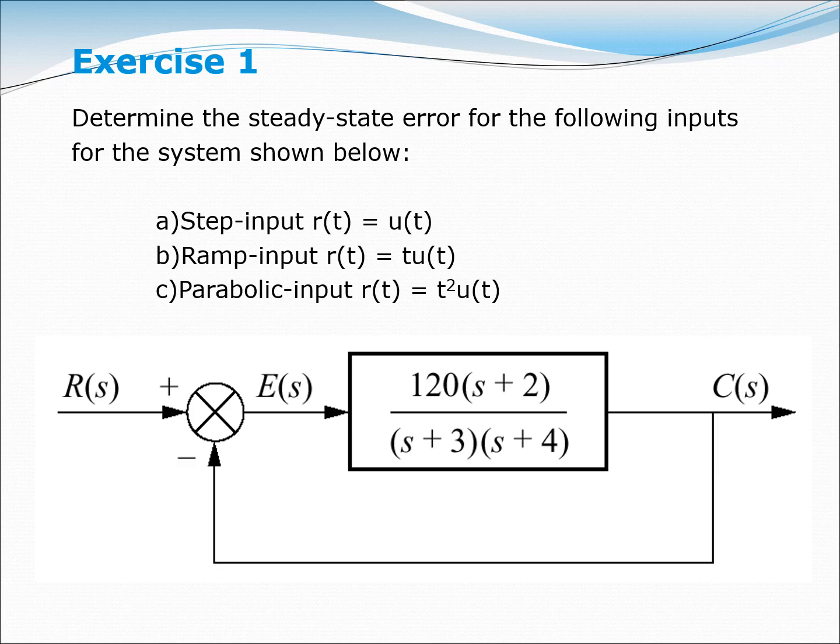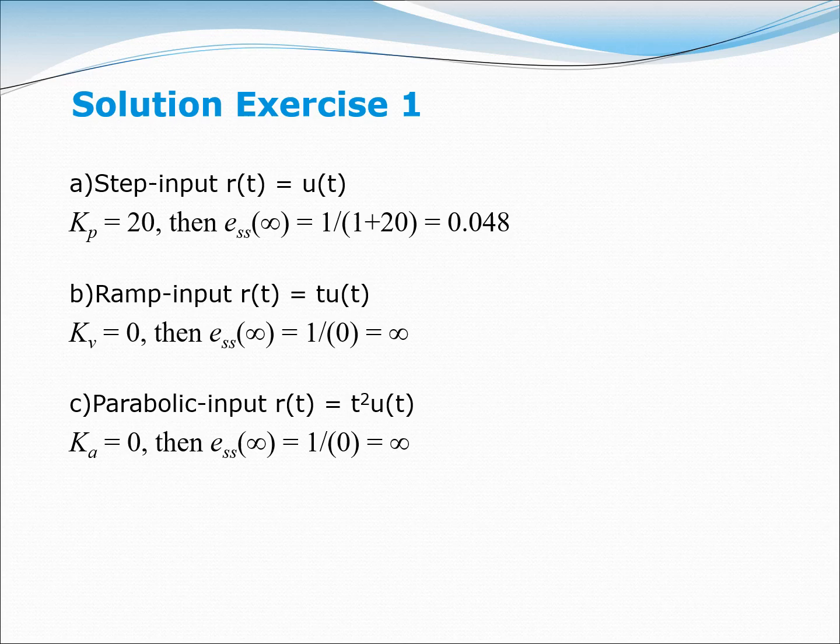Let's go to example SSS number one: determine the steady state error for the following inputs for the system shown. The inputs are: step input R(t) equals u(t), ramp input R(t) equals t·u(t), and parabolic input R(t) equals t squared·u(t), given the transfer function provided.